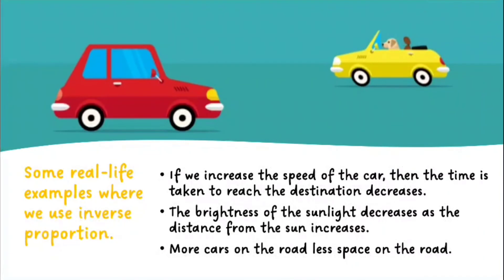Some real-life examples of inverse proportion are: if we increase the speed of the car, then the time taken to reach the destination decreases. The brightness of the sunlight decreases as the distance from the sun increases. More cars on the road means less space on the road.